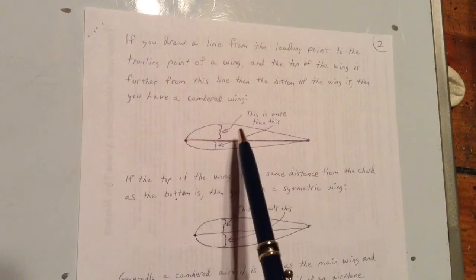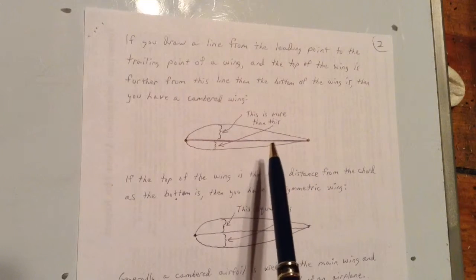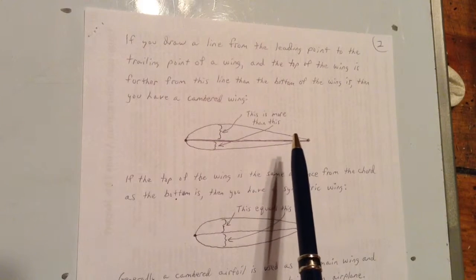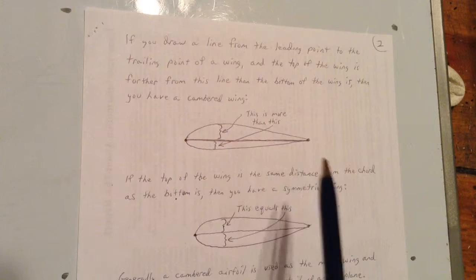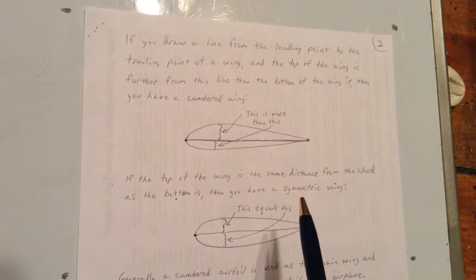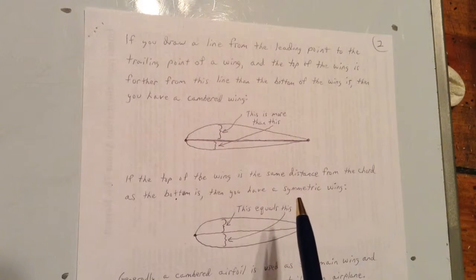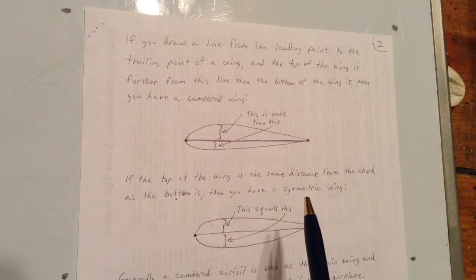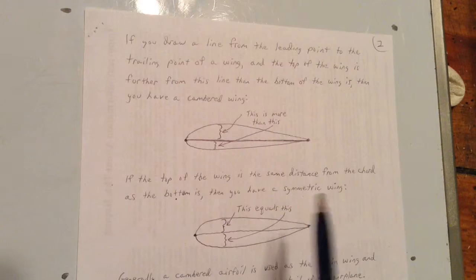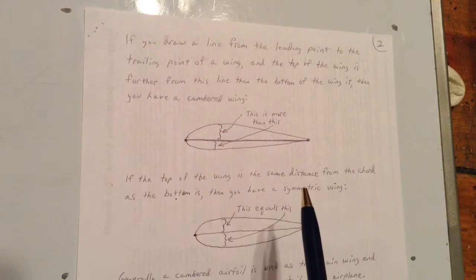Most airplanes have cambered main wings up front, and a non-cambered or symmetric airfoil for the tail of the airplane. Bert Rutan likes to make airplanes that have a little wing up front and a big wing in the back, and they both lift. But typically you'll see a big wing up front and a small airfoil in the back, and the big wing lifts the weight of the plane plus a little bit, and the tail of the plane pushes down on the plane. This is because the center of gravity is always in front of where the wing lifts. That gives us stability.